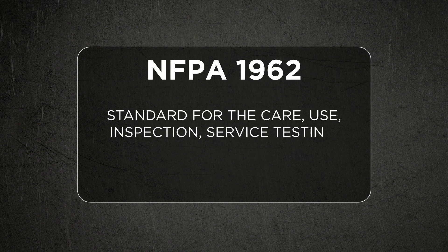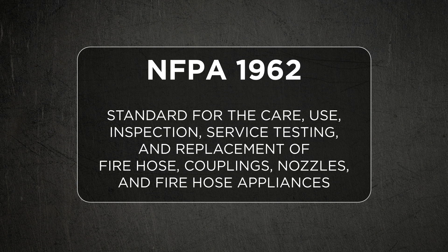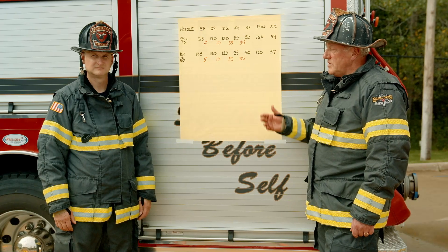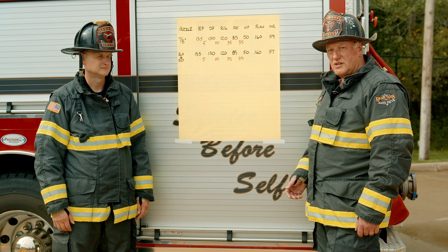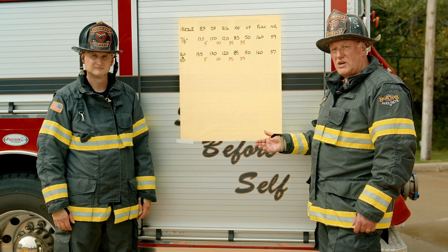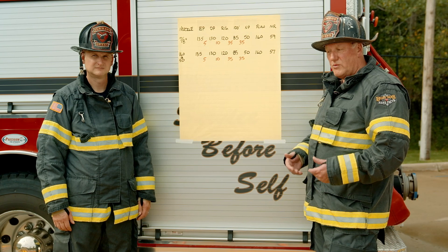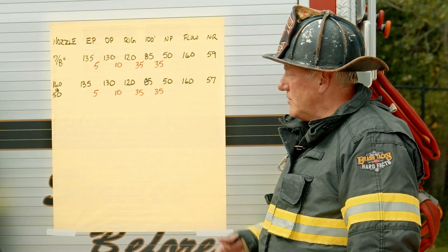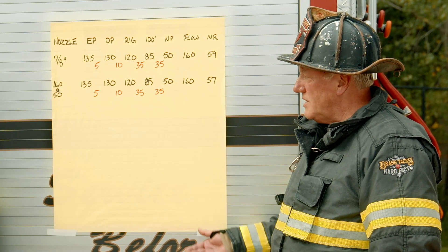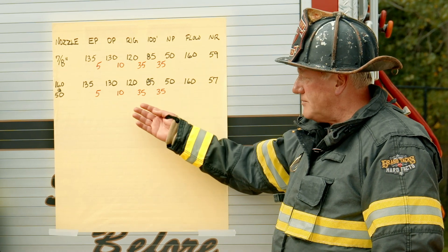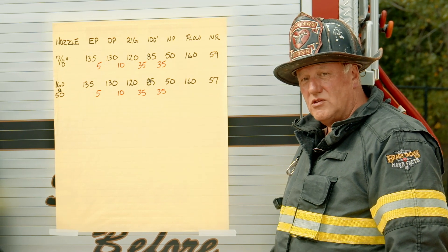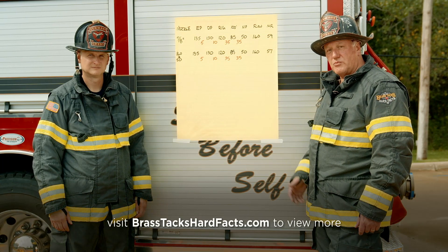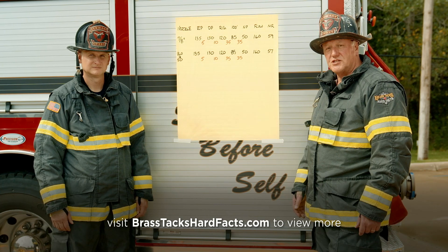The NFPA 1962 standard gives us a simple template approach that can accomplish many objectives. If we were looking to do a complete NFPA 1962 test of the rig, we would gather this information for every discharge. If utilizing this approach for a hose and nozzle evaluation, it would bring it down to an obvious recommendation. If using it to validate discharge flow on every discharge, we'd capture our plumbing loss and identify that we're not flowing what we may think we're flowing. Utilize the standard based on what your objectives are, and it will bring you to the information you need to make a decision.